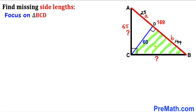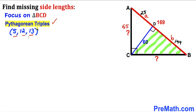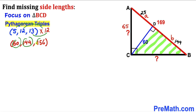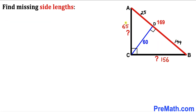Now let's focus on right triangle BCD and recall the Pythagorean triplet 5, 12, and 13 again. This time we multiply by 12, giving us a new set: 60, 144, and 156. We can see this triangle has 60 and 144, so the missing side BC is 156 units. Thus our missing side length AC is 65 units and missing side length BC is 156 units. Thanks for watching and please don't forget to subscribe for more exciting videos.